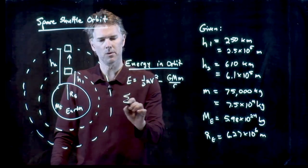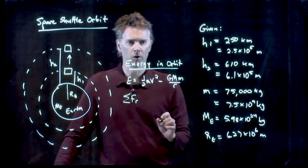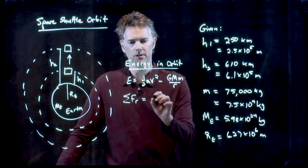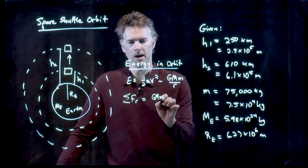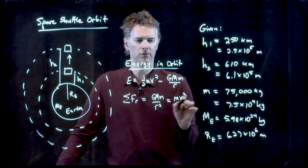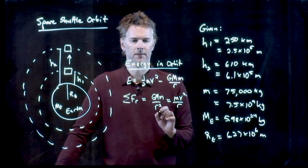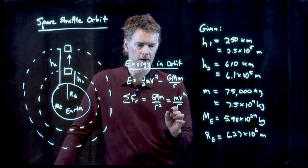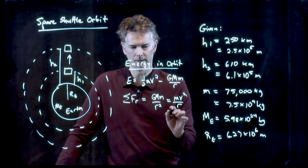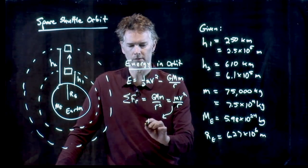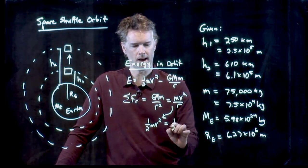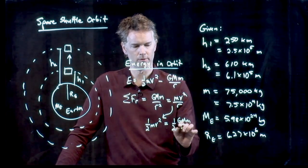And the other equation that we use is summing the forces for circular motion. There's only one force here, which is gravity, GMm over r squared. All of that has to equal mv squared over r. And now look what happens. If I multiply by r on both sides, and I multiply by a half on both sides, I can rewrite this as the following. One-half mv squared equals one-half GMm over r.